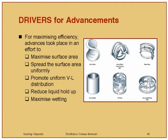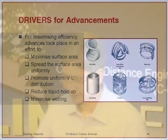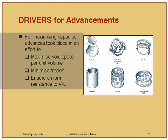Drivers for advancement in packing design included maximizing efficiency by maximizing surface area, spreading it uniformly, promoting better vapor-liquid distribution, reducing liquid holdup, and maximizing wetting — because even the most efficient packing will not contribute to vapor-liquid contact if the packing surface is not properly wetted. For maximizing capacity, advances aimed to maximize void space per unit volume, minimize friction, and ensure uniform resistance to vapor-liquid flow. The main concept was to maximize useful area and minimize wasteful area.